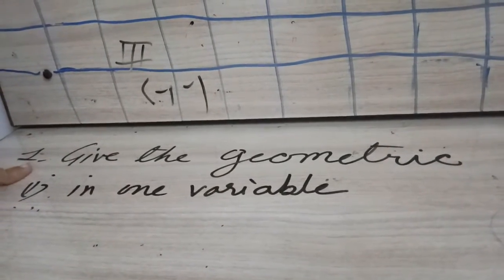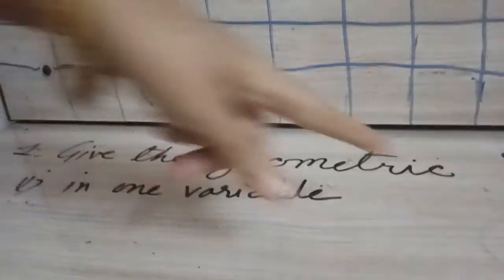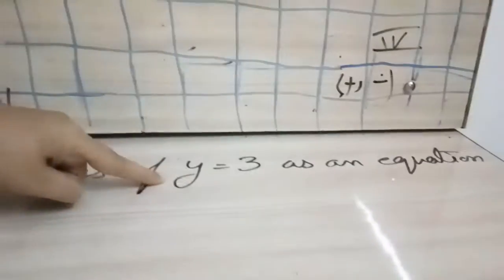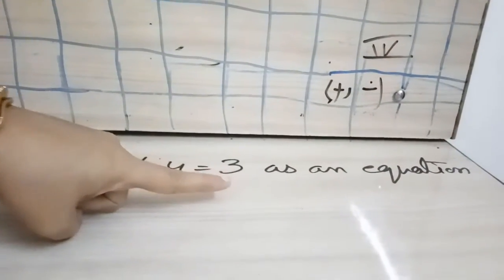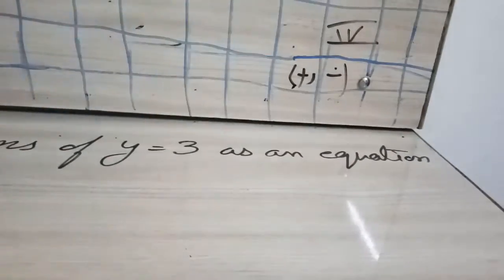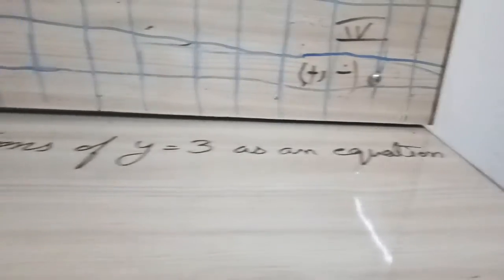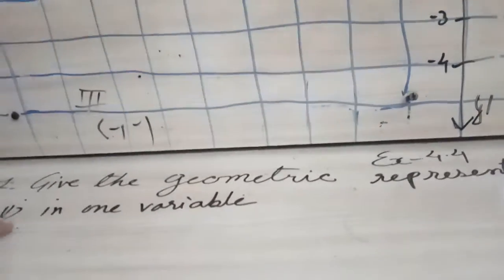It is given that we have to geometrically represent y equals 3 as an equation. We have to represent it graphically. First part, they are telling us to represent in one variable.